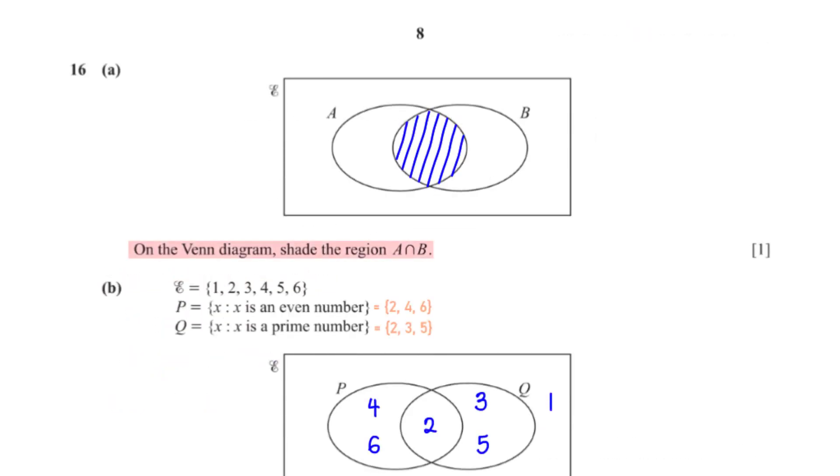On the Venn diagram, shade the region A intersection B. On the diagram, we've shaded the region A intersection B.